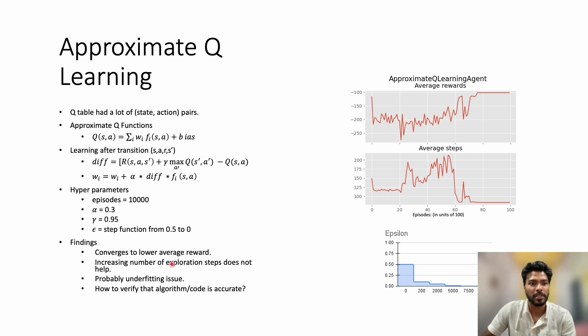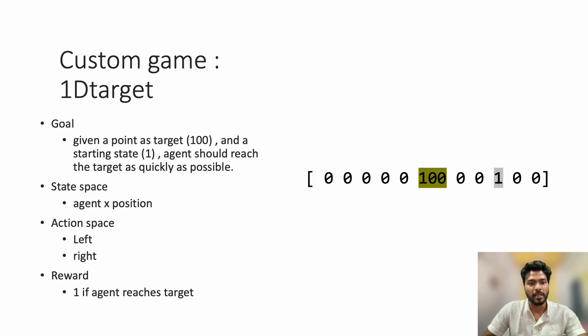However, the approximate Q-learning converges to lower average rewards. Increasing the number of exploration steps also does not help. Probably it is underfitting. How to verify that this algorithm is correct? Since the lander is actually a very complex environment, I came up with my own game to test the approximate Q-learning algorithm.